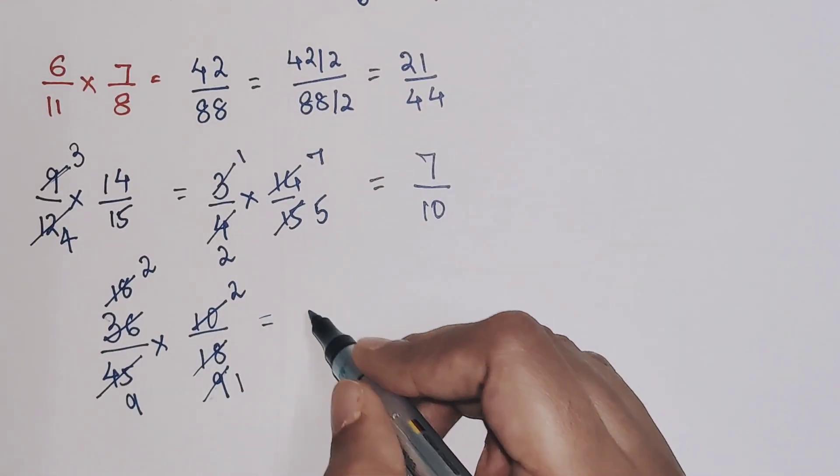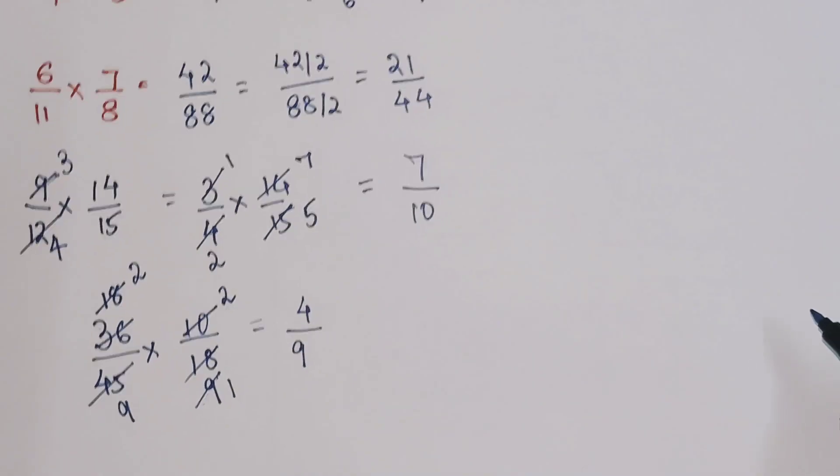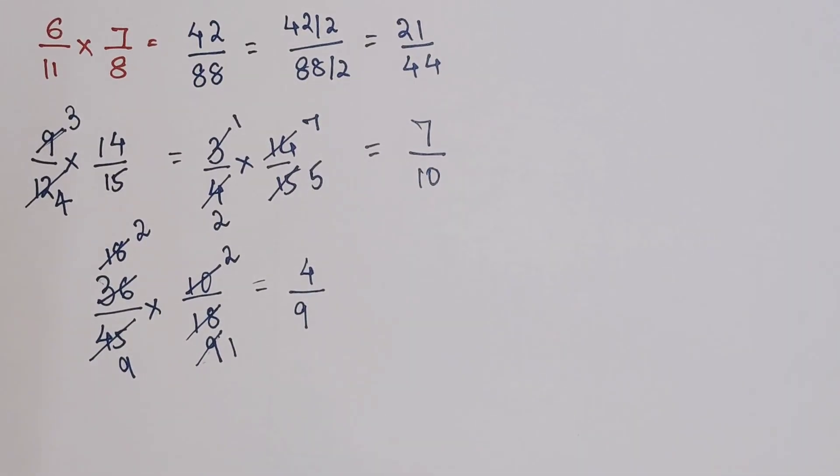So your final answer is now just writing the leftover number. So we have 2 into 2, that gets you 4, and 9 into 1 gets you 9. So I hope now you all have understood how easily you can do these kind of things.